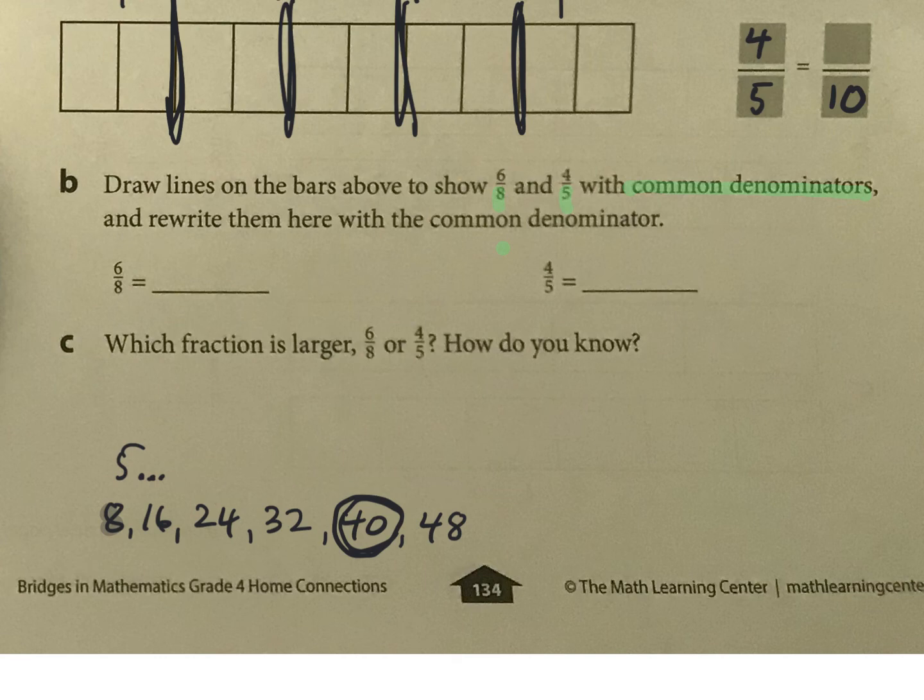So to put 6 eighths into 40, what would I multiply it times? 8 times what is 40? It's 8 times 5. So 6 times 5 is 30, and that's going to give me an equivalent fraction to 6 eighths. Then here, 4 fifths, what is the common denominator? Again, it's going to be 40ths. So think 4 fifths times what would give you 40ths. 5 times what is equal to 40. That number will go the same on both, and then you'll be able to compare them.